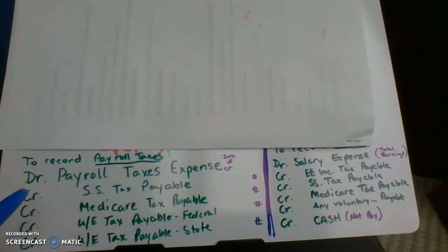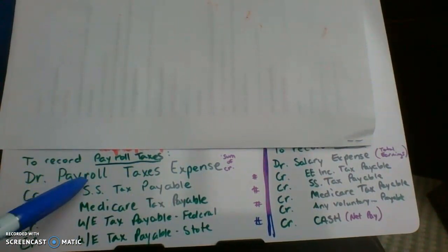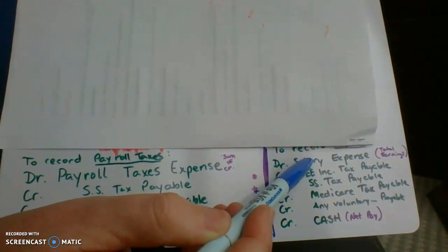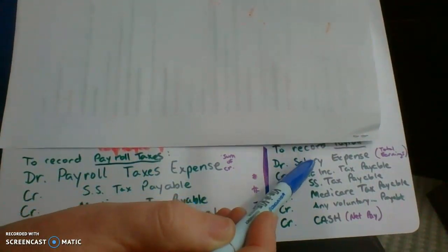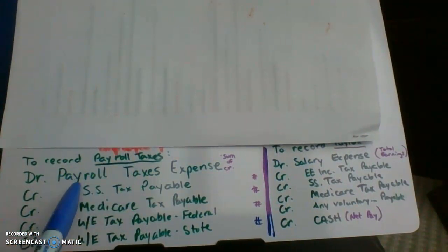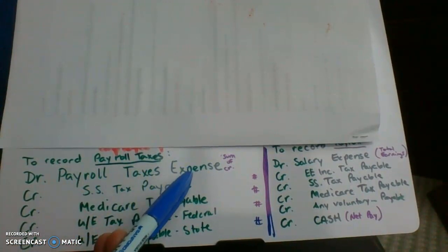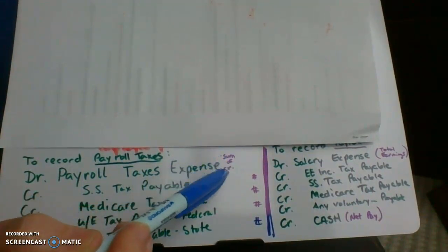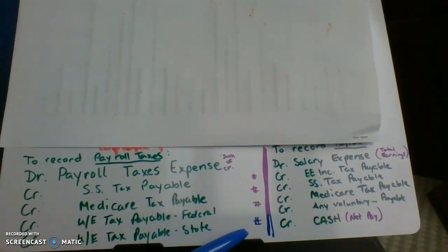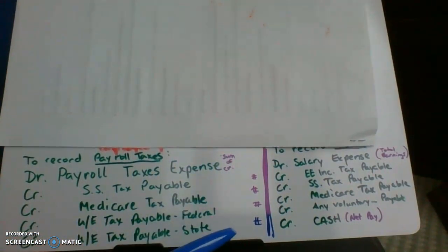Go ahead and write this entry down. We are going to debit an account called payroll taxes expense. When it's paying employees, it's salary expense. But when it's the employer paying the government for payroll taxes, it's payroll taxes expense. To get that debit number, it's just the sum of all the credits.